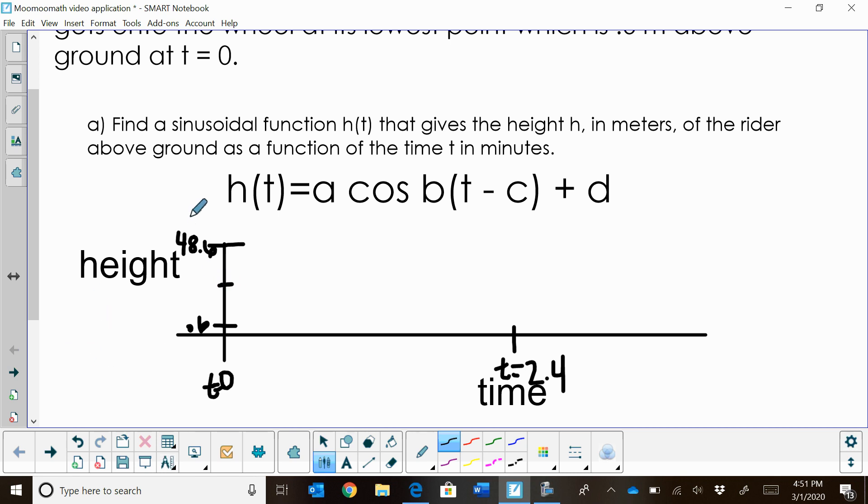To find the halfway point, I'm going to add 48.6 plus 0.6. So that's going to give me 49.2, and I'm going to divide that by 2. That's going to give me 24.6. So 24.6 is going to be halfway. That's going to be this midline here, 24.6. Now, I call that my midline, and I'm going to draw my sinusoidal based on that midline.